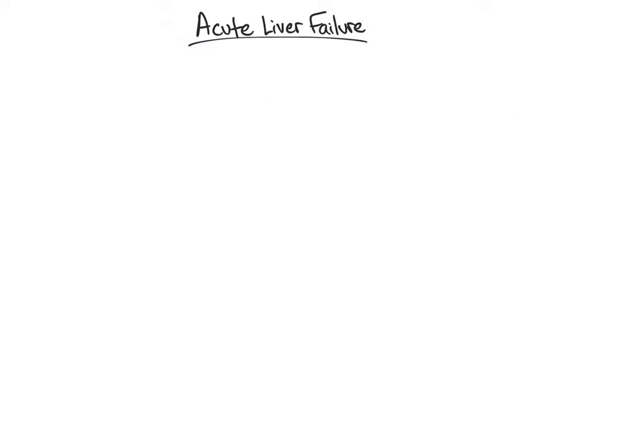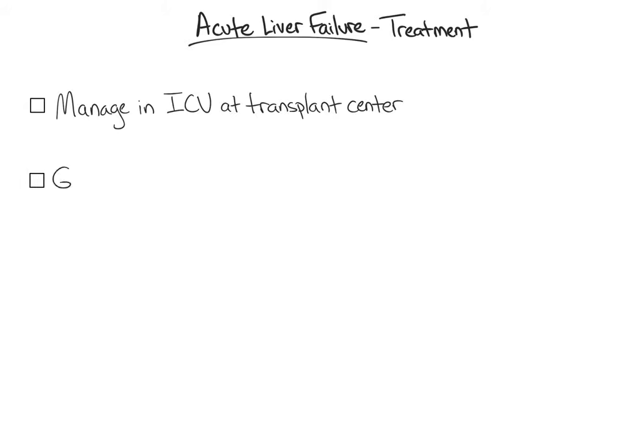Once we have diagnosed acute liver failure and initiated the workup, we transition to the most important aspect: treatment. All patients with acute liver failure should be managed in an ICU at a transplant center, with a GI or hepatology consult. In the ICU, patients should receive standard evidence-based airway management and respiratory support, fluid resuscitation, and cardiovascular support.